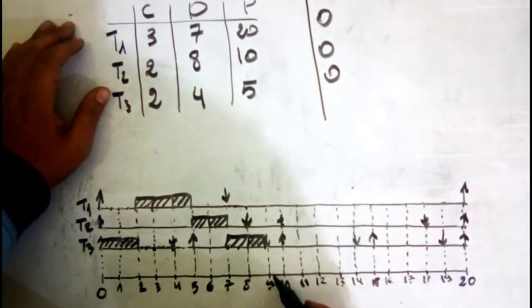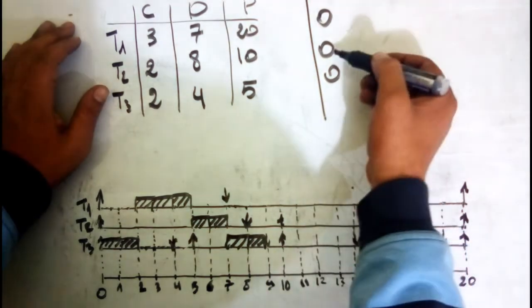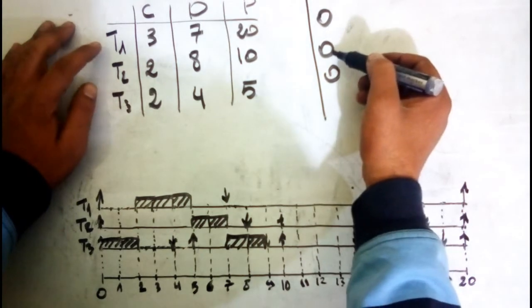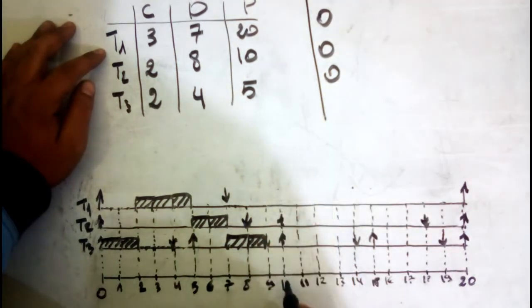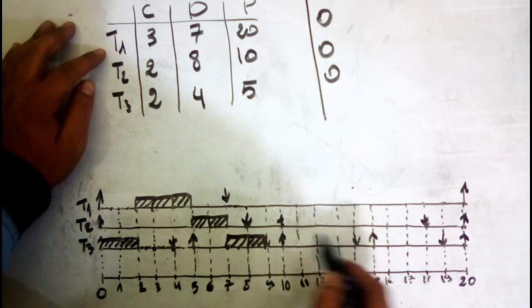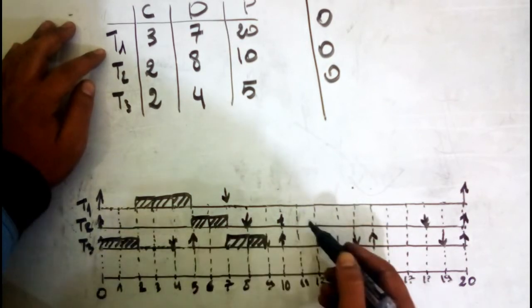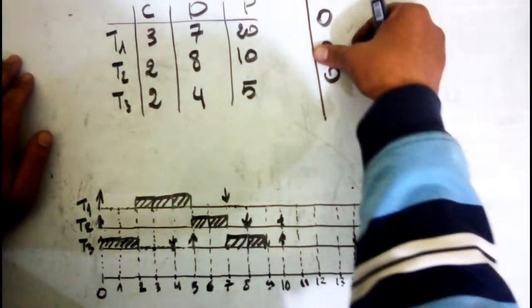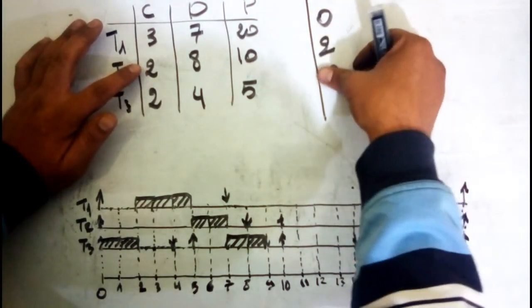Now the processor stays idle — no process needs to execute. At time unit 10, T3 and T2 wake up because new periods begin for both. We re-initialize their capacities.